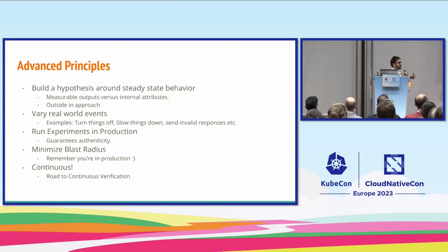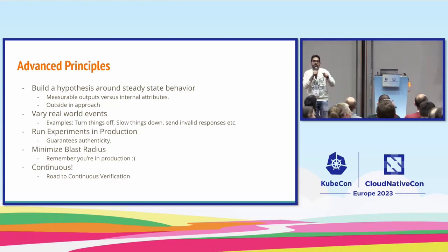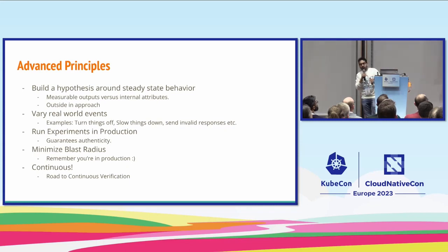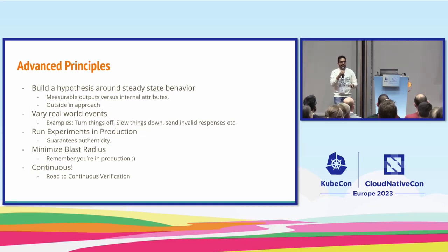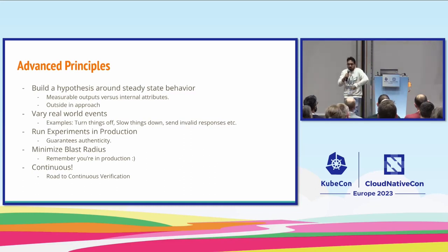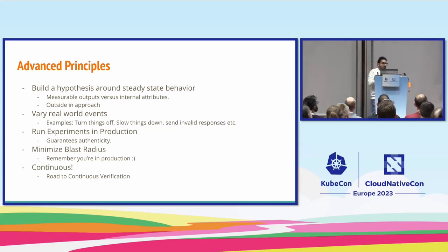You also have to communicate with the team — make sure everyone knows what chaos experiments are being run on which application. And you have to keep doing it in a continuous manner. When you bring in a new feature or change, you have to redo all the chaos engineering experiments with the new release, because with cloud native you keep adding new features faster and faster.